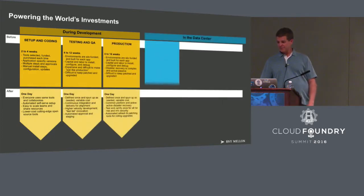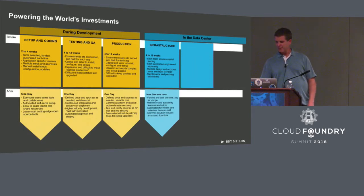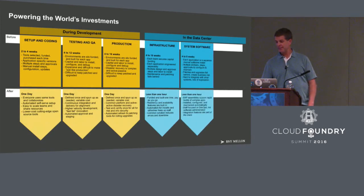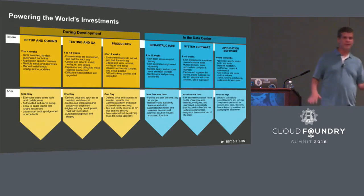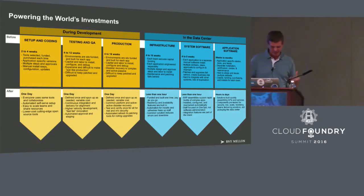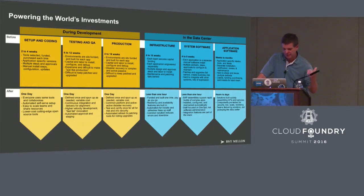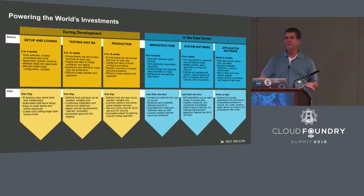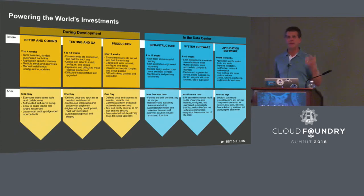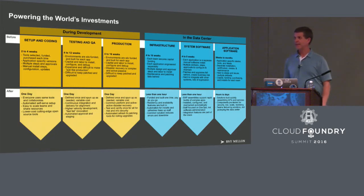The point of this slide is to show how we've advanced over the years in our ability to provision and deliver software, taking a long period of time to a much shorter period. Back in the old days it would take two to four weeks for setup, four to twelve weeks for testing and QA, four to sixteen weeks to get things into production. We've got most of that down to a single day. But there are incredible challenges we have as a bank to try to get there.